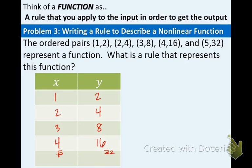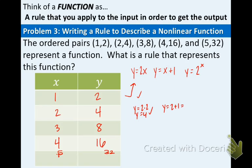Now that we have our coordinate pairs listed in the table, let's try to figure out some equations that would work. A couple of possibilities are: y equals 2x, y equals x plus 1, and y equals 2 to the x. Let's test out each row of ordered pairs. They all work for the first row. When we plug in 2, y equals 2x gives 4 — that works. y equals x plus 1 gives 3, not 4 — so that one is eliminated. y equals 2 to the second is 2 times 2, which is 4 — that works as well. So we're getting rid of y equals x plus 1 altogether.